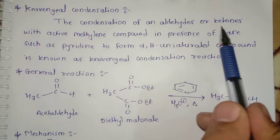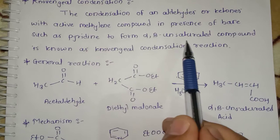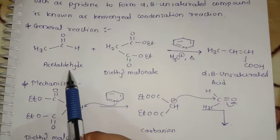Knoevenagel condensation: The condensation of an aldehyde or ketone with an active methylene compound in presence of base such as pyridine to form alpha-beta unsaturated compound is known as Knoevenagel condensation reaction.